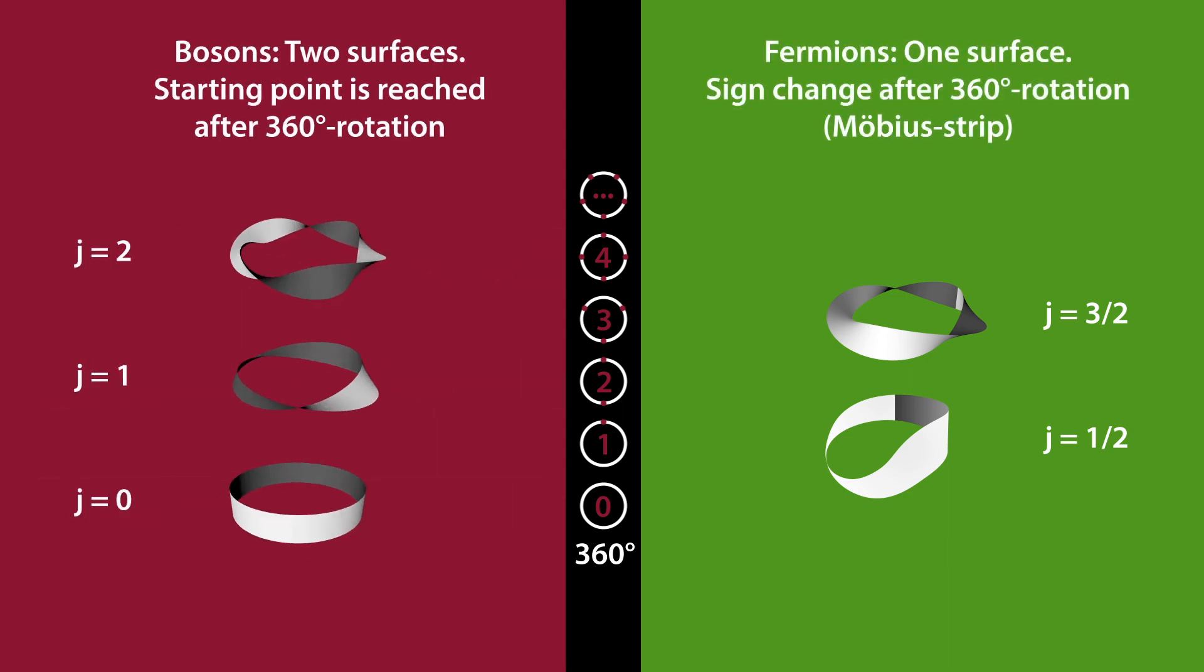This is the main difference of the phase of the quantum states from bosons and fermions. Only the fermions completely fill up the 720-degree space. The bosons are already satisfied with 360 degrees.